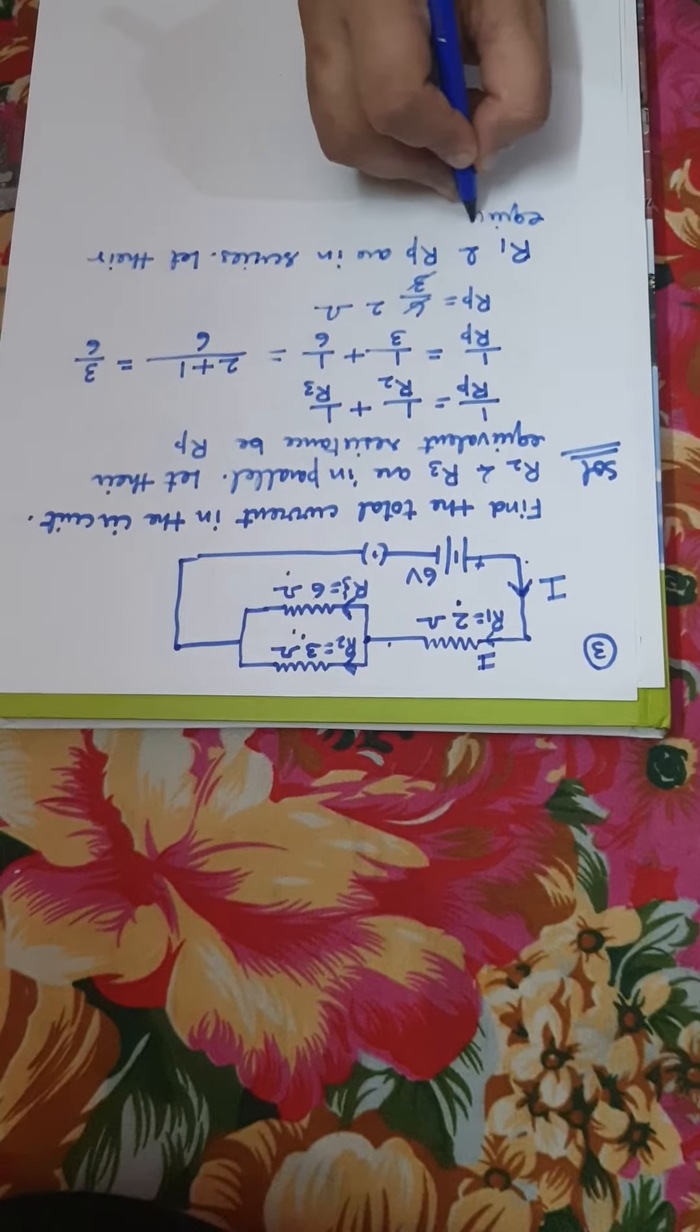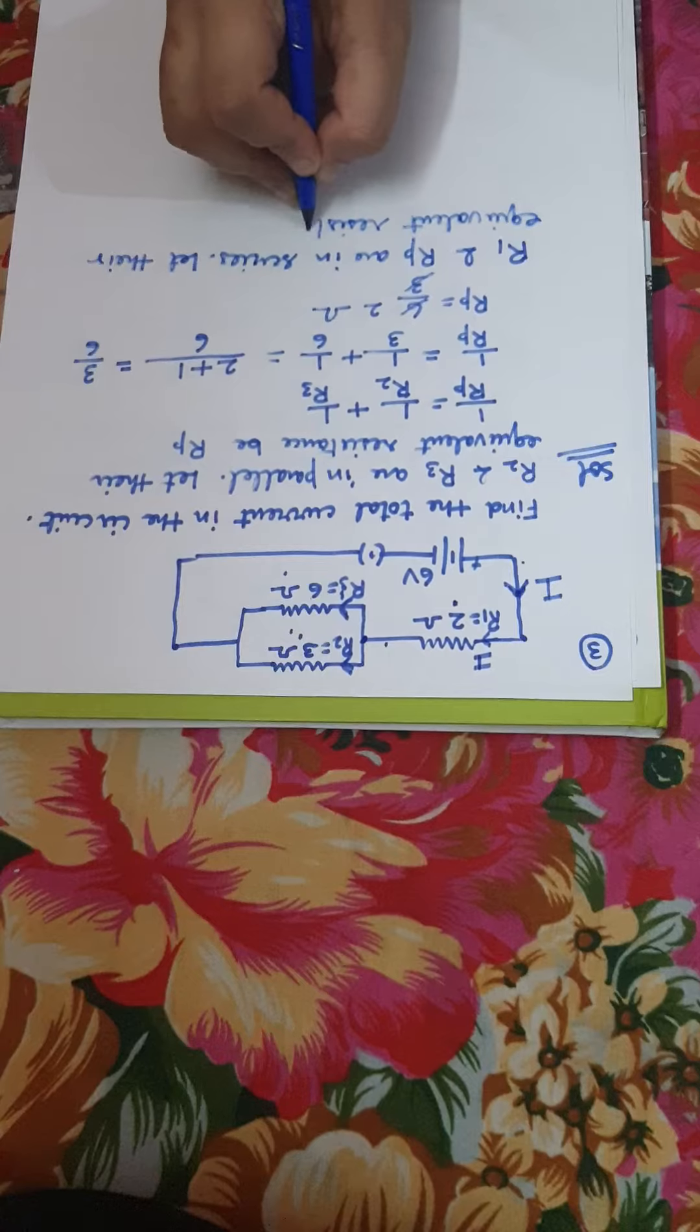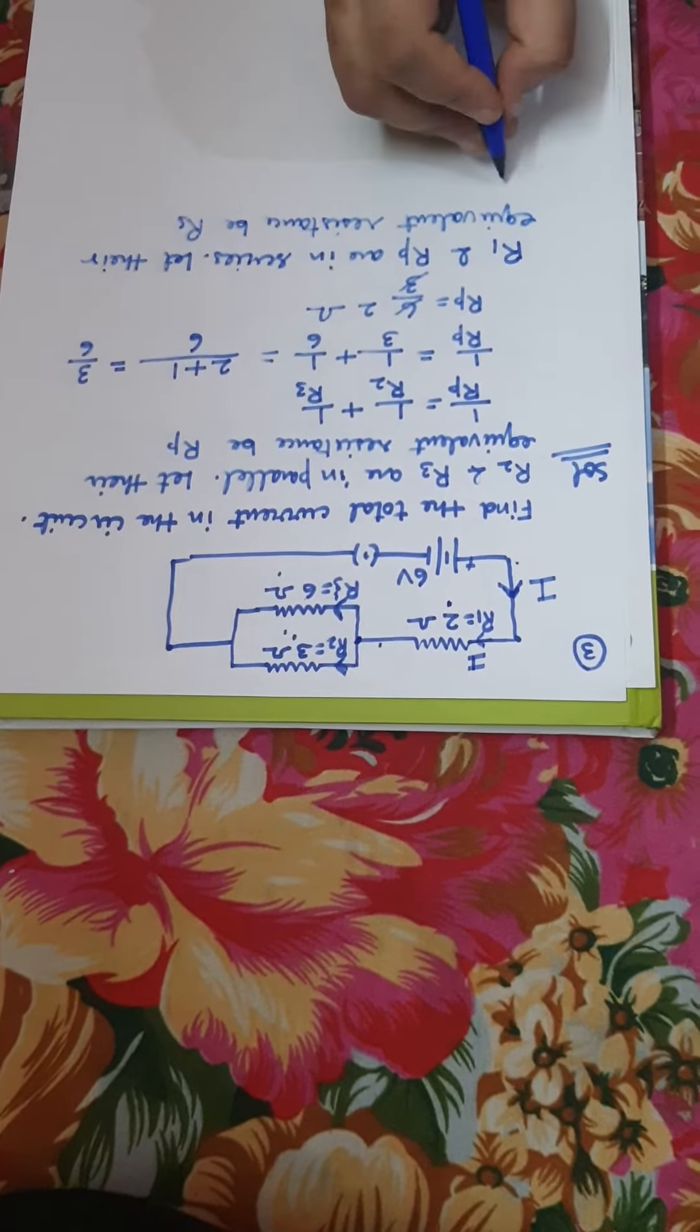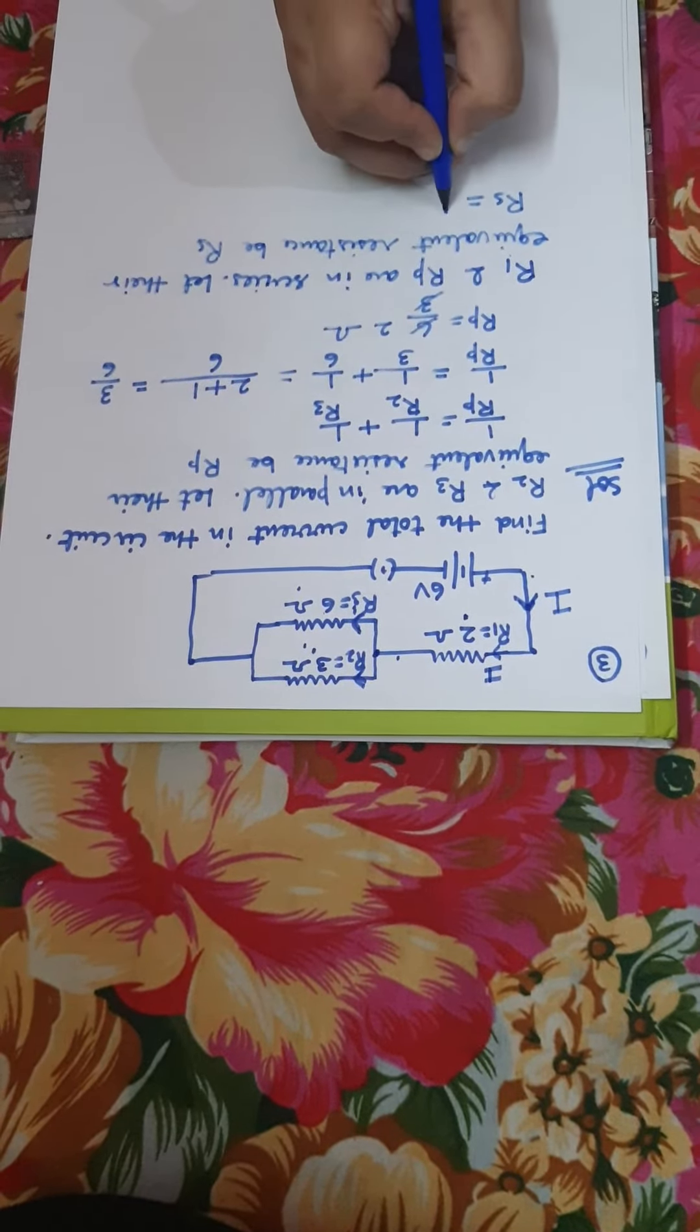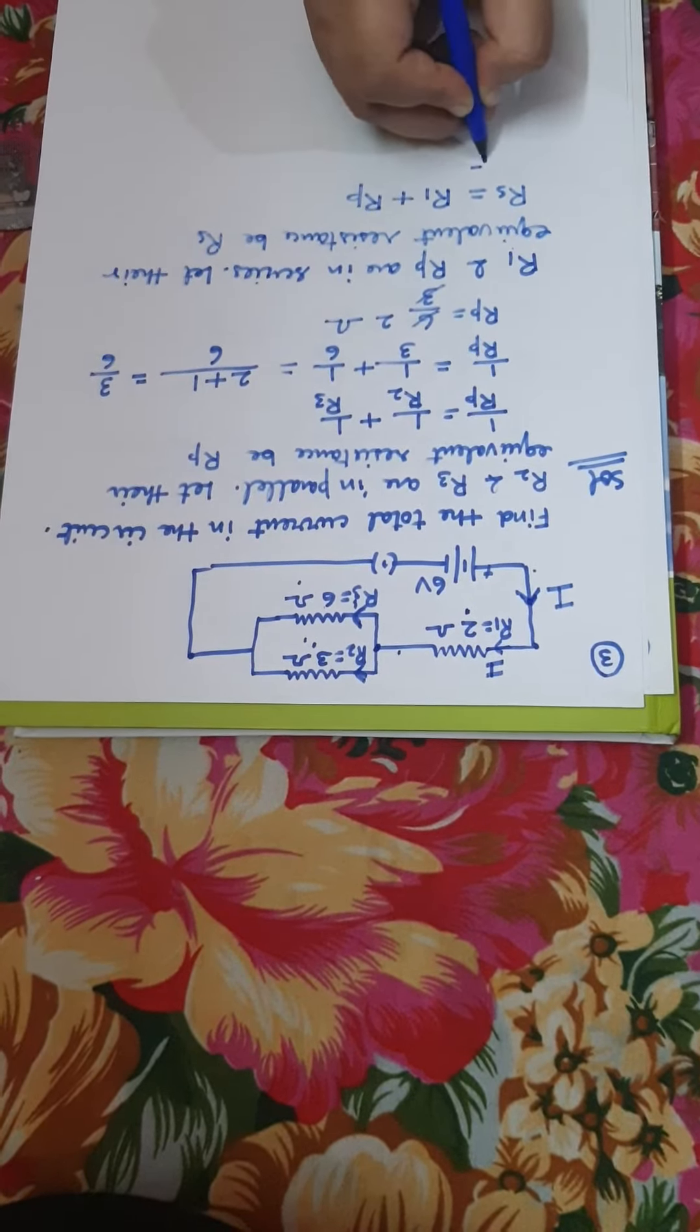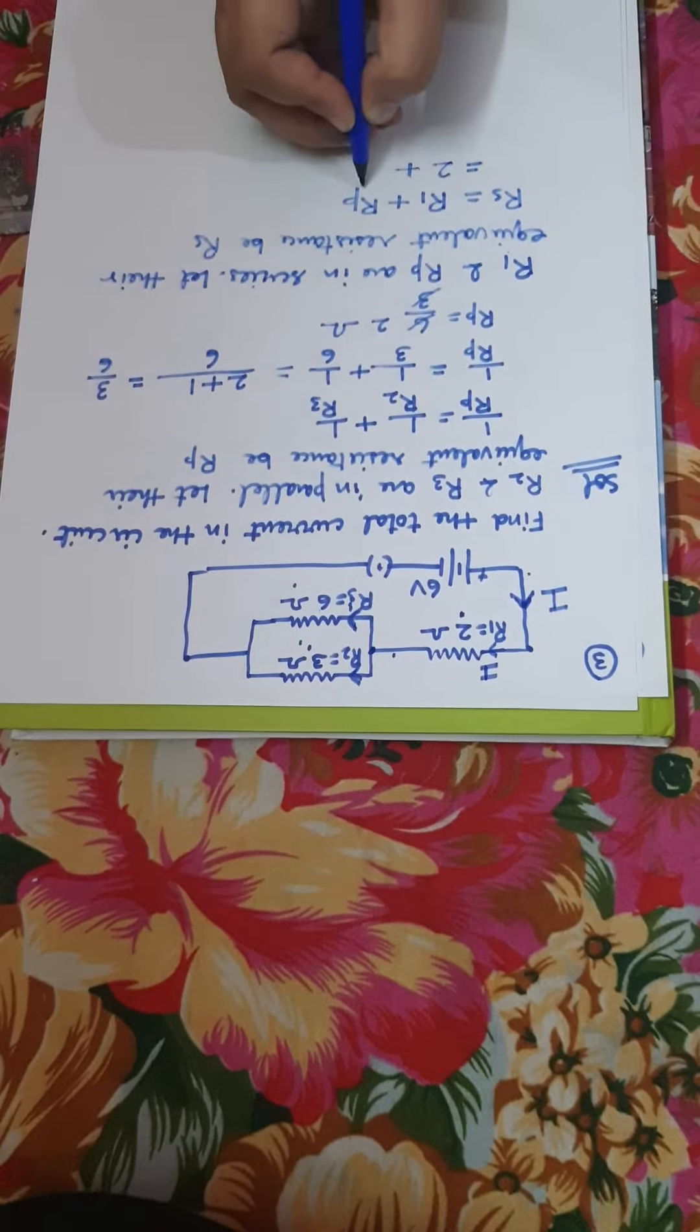Let their equivalent resistance be Rs. So Rs will be equal to the series combination of R1 and Rp, so it will be R1 plus Rp. So it will be equal to R1 which is 2 plus Rp which is again 2.